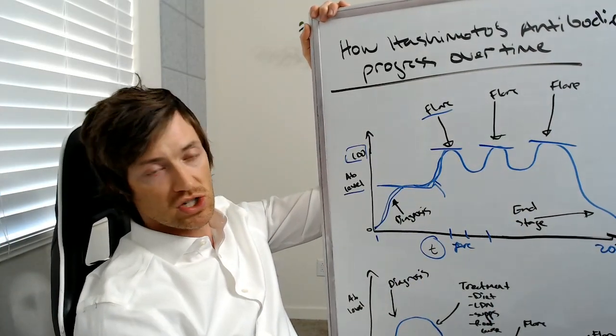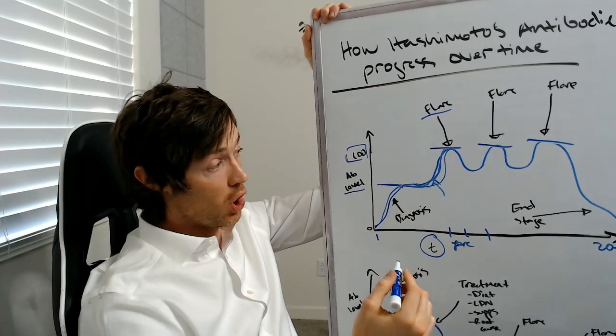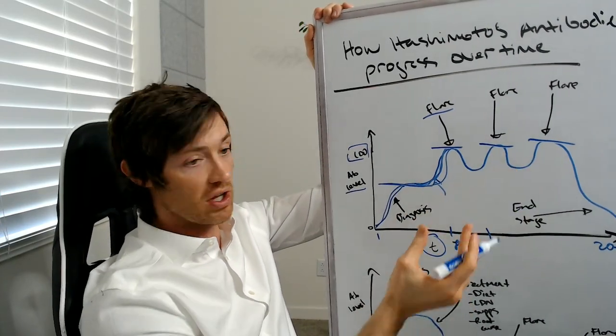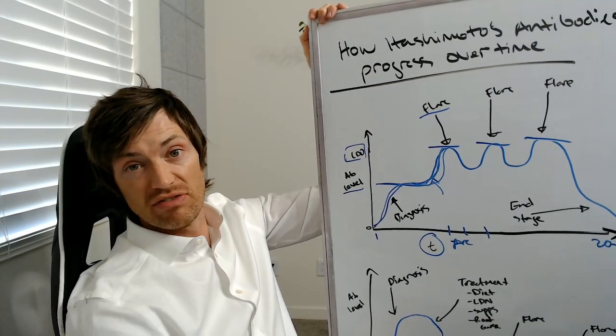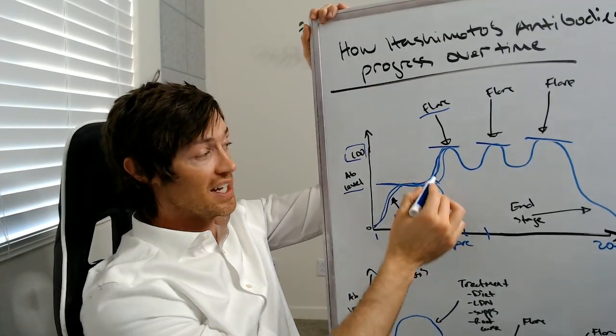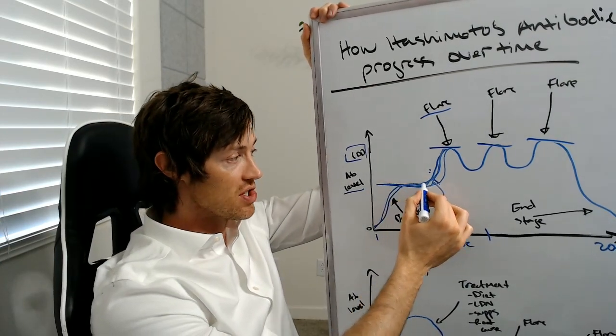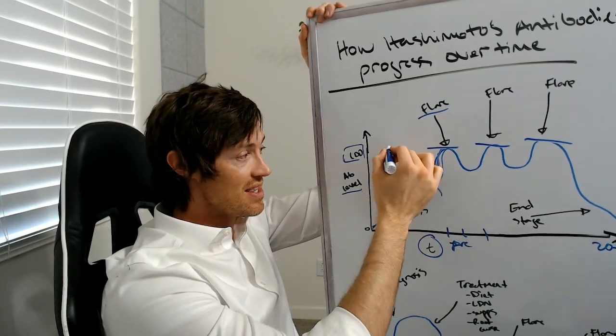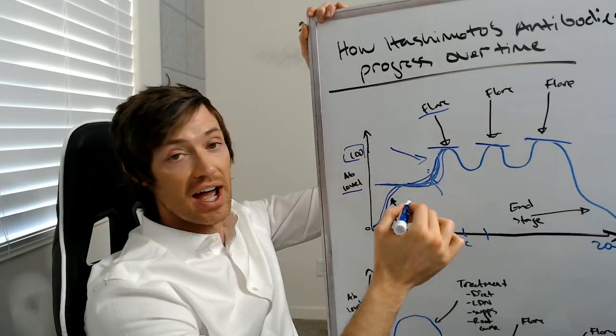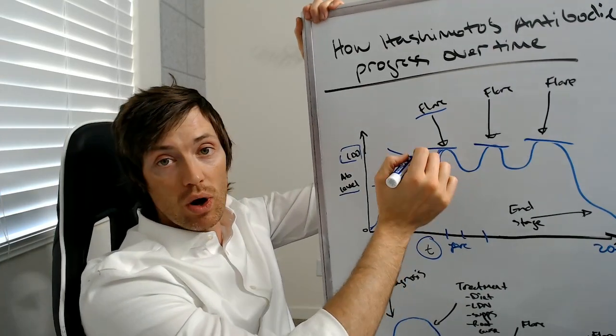Now many Hashimoto's patients will experience a flare in their antibody levels several times. Probably I can only illustrate three here on this graph over a period of time, but this could be five, this could be 10, this could be 15, just depends on you. And it depends on what things trigger those flares. Now what happens during a flare is those antibodies dramatically rise. And as they rise, as they increase over the short period of time, more damage is occurring in the thyroid gland.